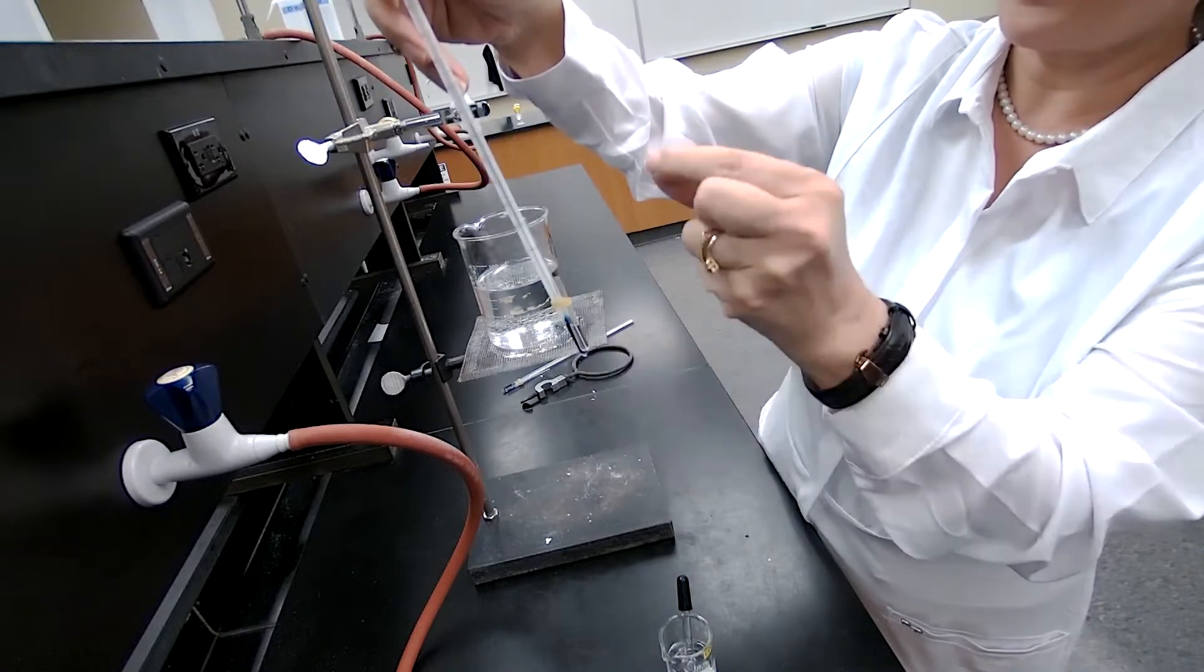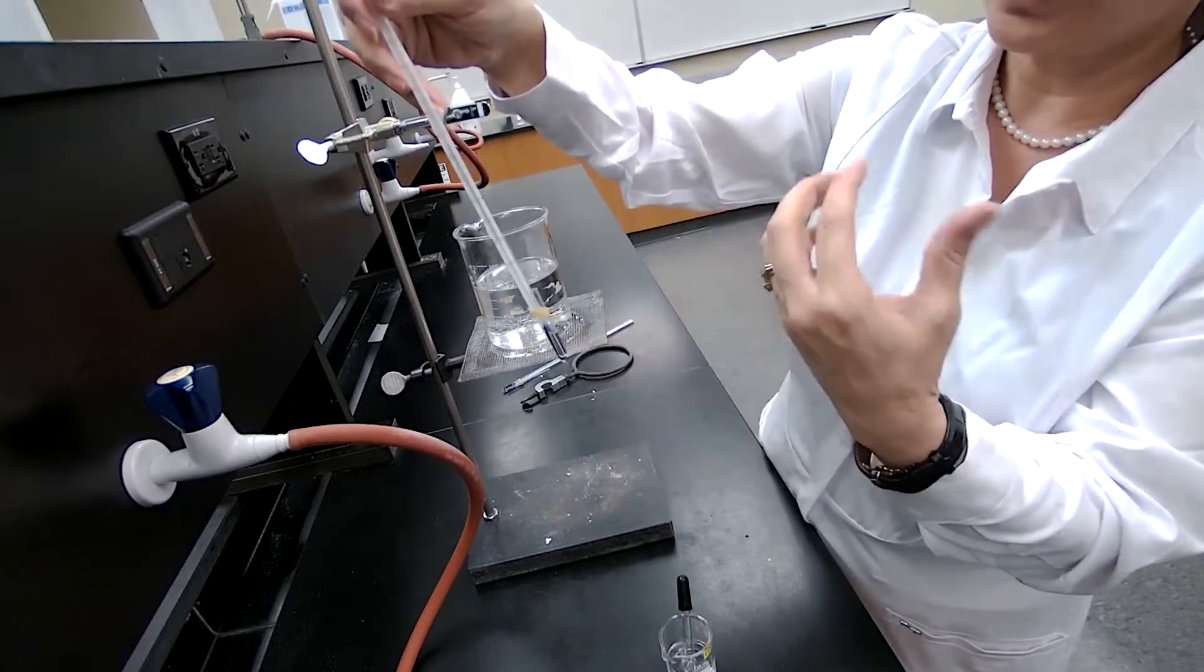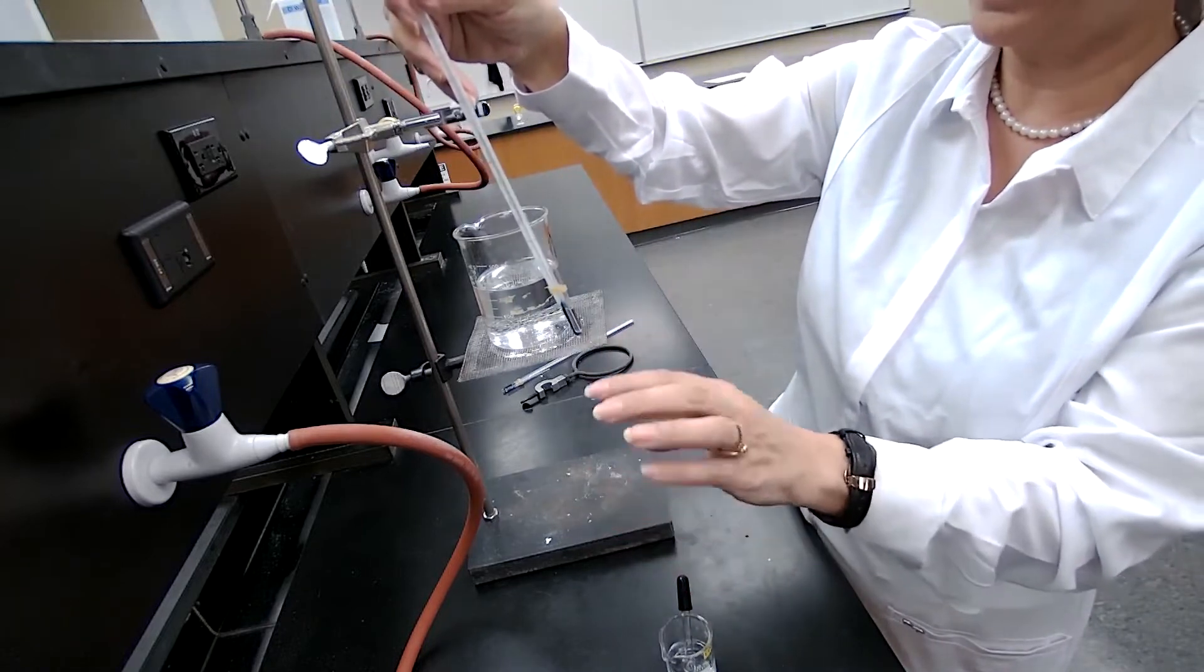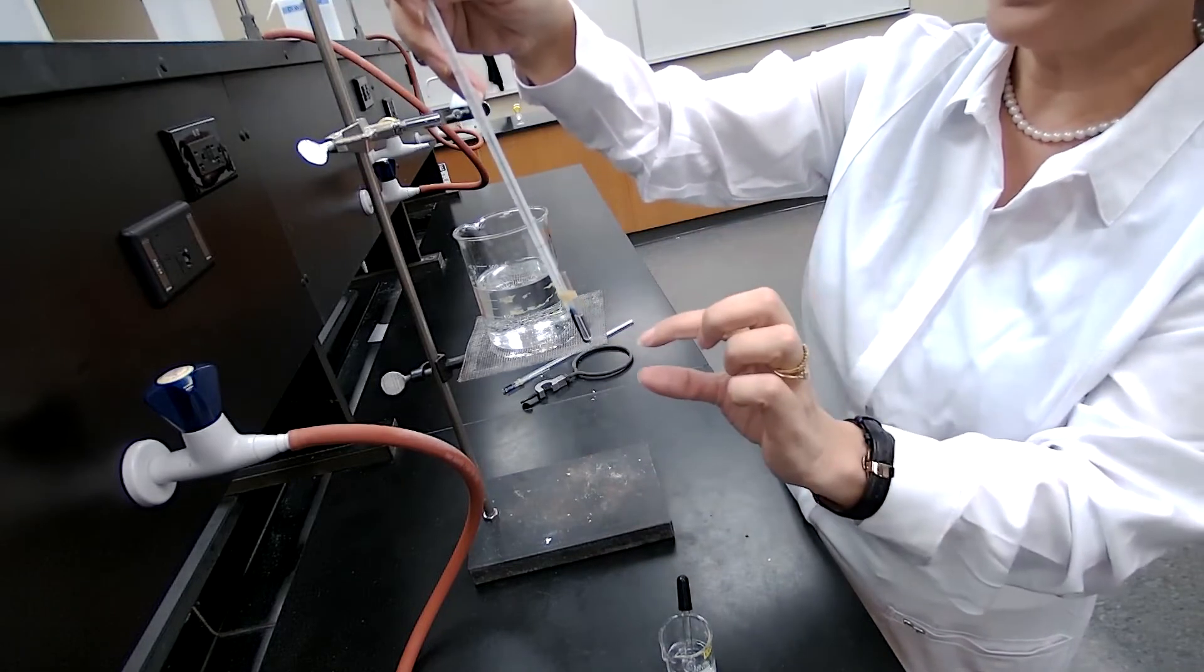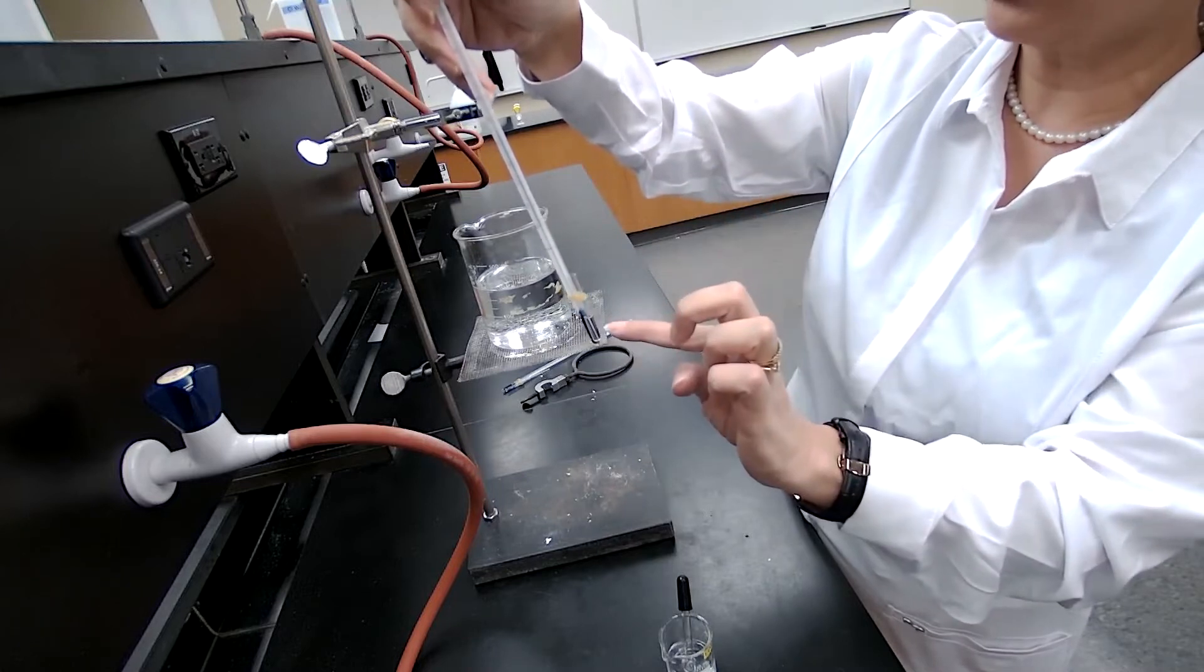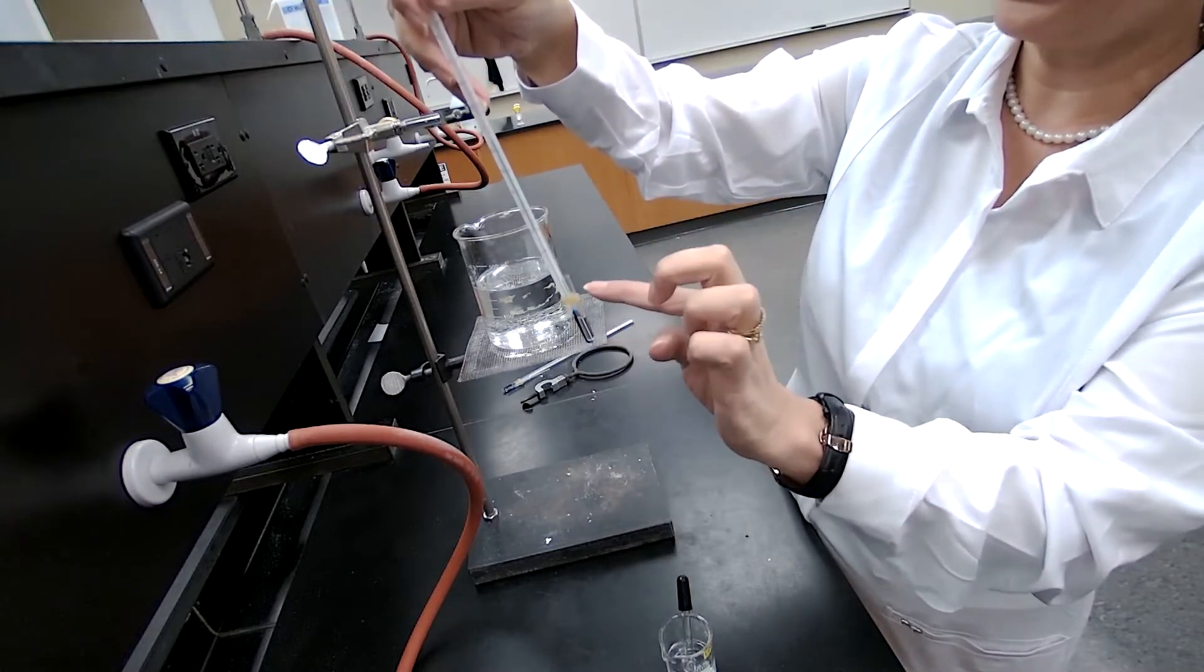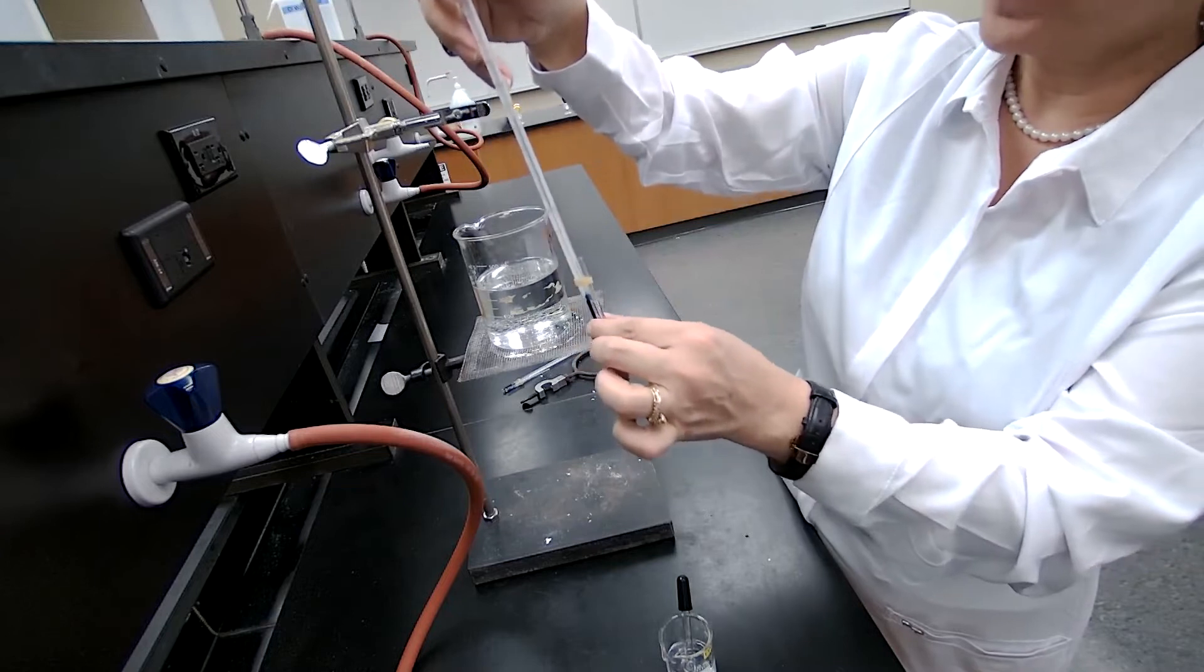When the bubbles come out very fast, that means the temperature is higher. So I would stop the flame, and I will wait for those bubbles to stop coming out. And just before the liquid goes up in the capillary tube again, I record the temperature.